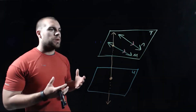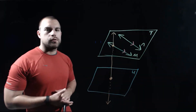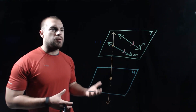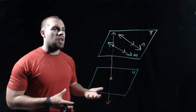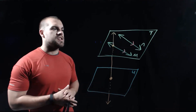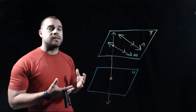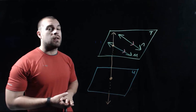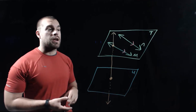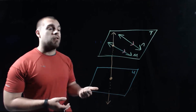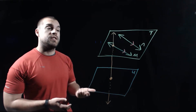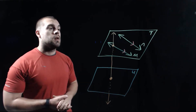Before we get to talking about those angle pairs, I want to talk about a couple different kinds of lines, specifically lines that don't intersect. There are two kinds of lines that aren't going to intersect: we have parallel lines and we have things that are called skew lines.